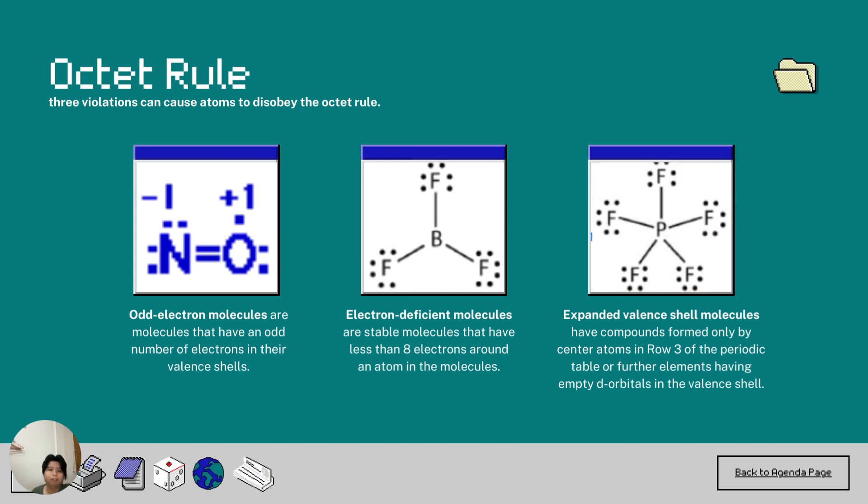Covalent and ionic bonding often adhere to the octet rule. According to the octet rule, atoms prefer to produce eight electrons in their outermost electron shells.